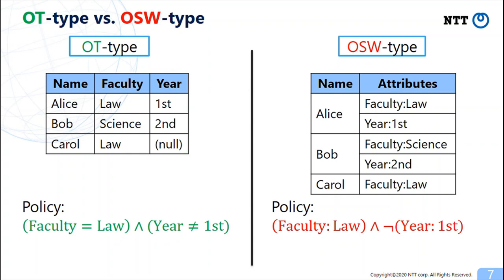Thus, Carol does not satisfy the policy because she does not have an attribute for year. The latter formula is satisfied if someone has attribute faculty law and does not have year first.